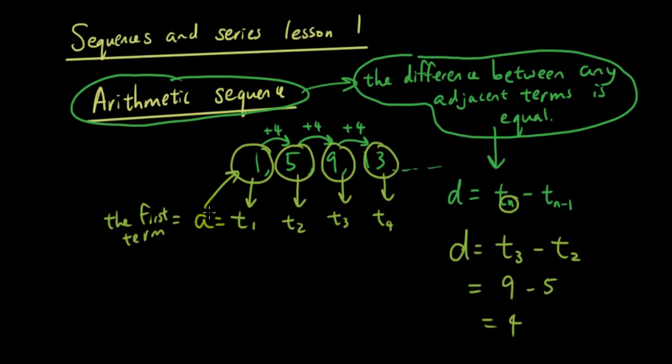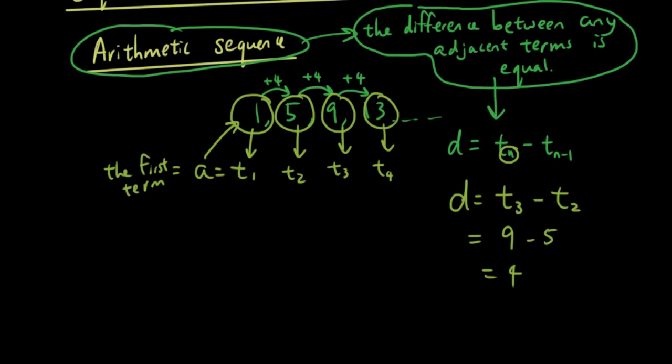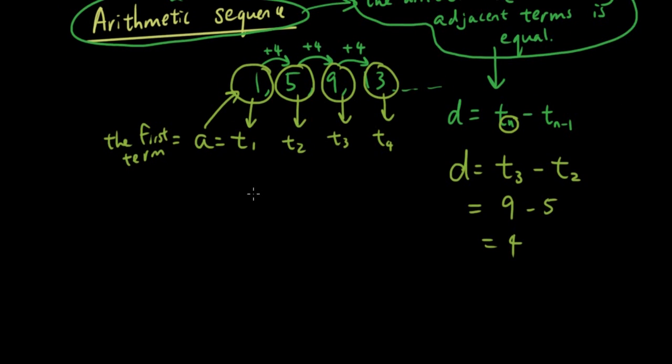Now once you have A and D, then you can come up with a formula for finding any term in the arithmetic sequence. And the formula is Tn equals A plus bracket N minus 1 times D.